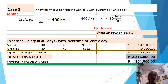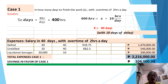Case 1: In how many days will they finish the work with overtime of 2 hours a day? It is best to start the solution by computing the total hours needed to finish the work using the given 50 days: 50 days times 8 hours per day equals 400 hours. Then, using ratio and proportion, 400 hours divided by 10 hours per day gives us 40 days.